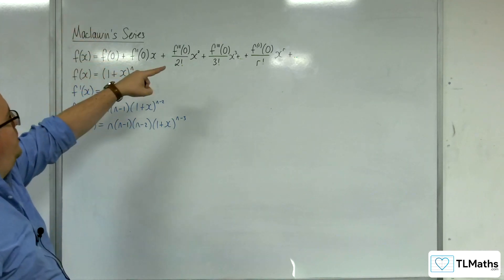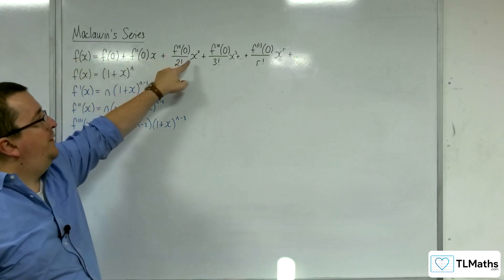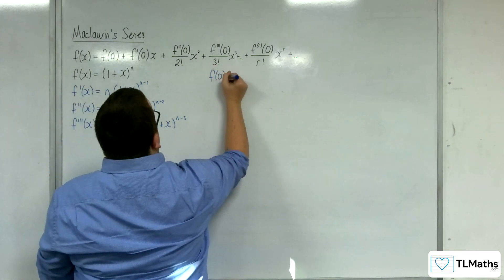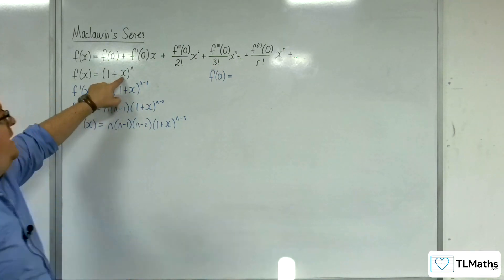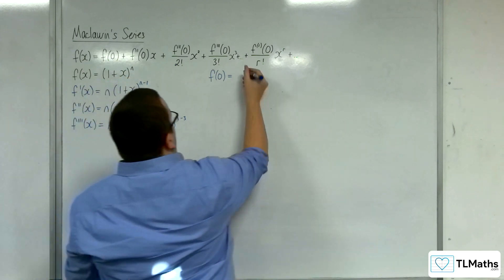From the formula, you can see that we're going to need to evaluate each of these functions at 0. So I want f of 0, so substituting x equals 0, we're going to get 1 plus 0 to the n, which is 1 to the n, which is just 1.